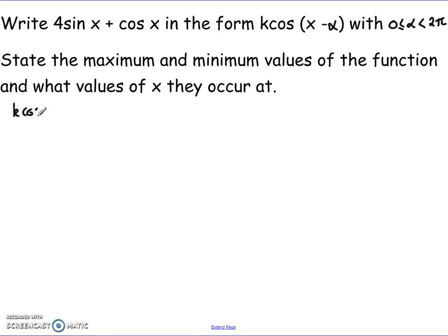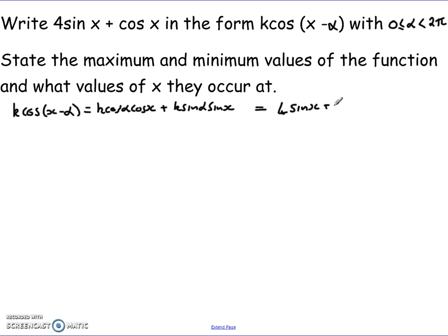To do that, we think about the steps from our previous video. First, we expand the bracket and write it as k cos α cos x plus k sin α sin x, grouping together the coefficient terms. We then equate it with the original function, 4 sin x plus cos x. We can see that k cos α and k sin α equal the two coefficients. There's nothing written before cos x, but remember that's 1 times cos x — so k cos α equals 1 and k sin α equals 4.